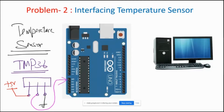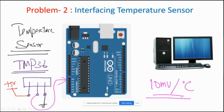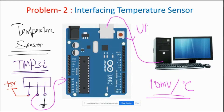The TMP36 is a temperature sensor that gives you 10 millivolts for every degree centigrade. For every degree centigrade temperature rise it gives 10 millivolt output, so we calibrate that and convert it into digital data. We are interfacing this with a PC via pseudo UART through USB.